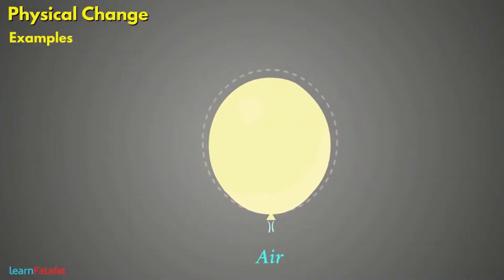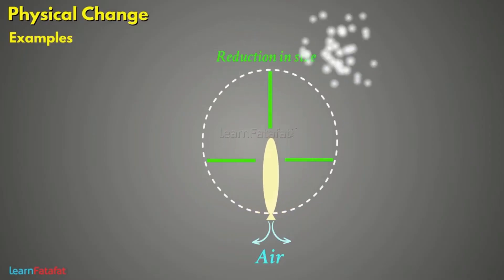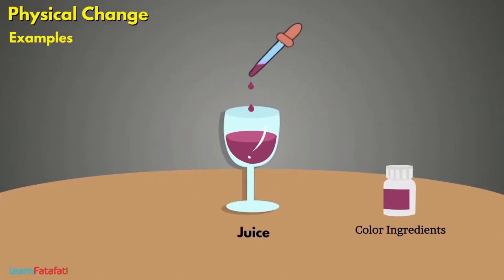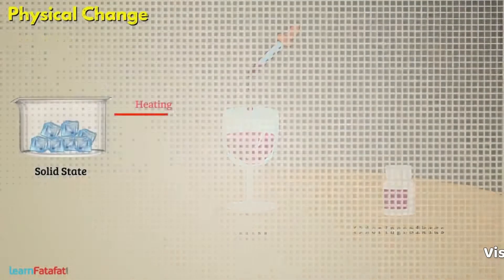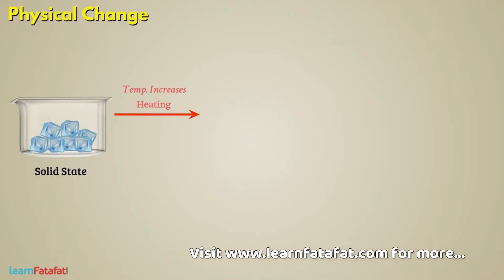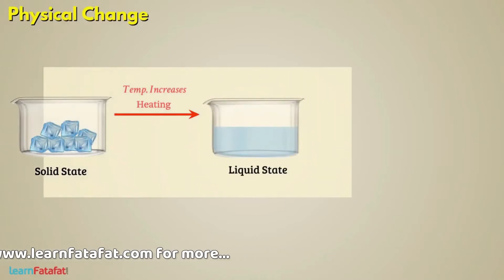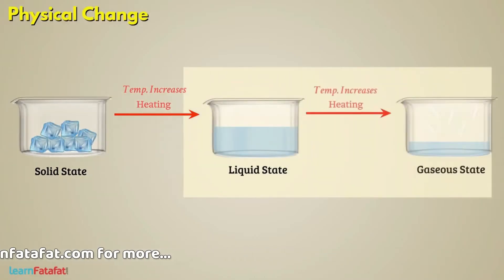However, releasing air from a balloon causes a reduction in its size. We often mix colour ingredients to make colour juices. By heating a substance, i.e. by increasing the temperature of the substance, it is possible to change its state from solid to liquid or liquid to gas.